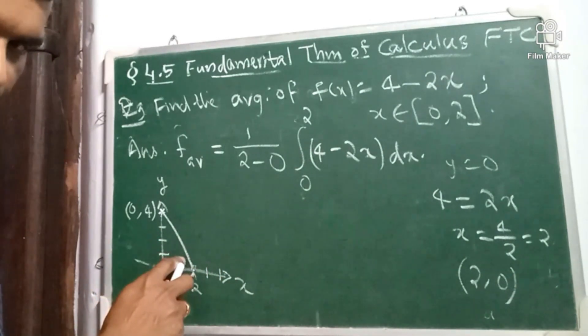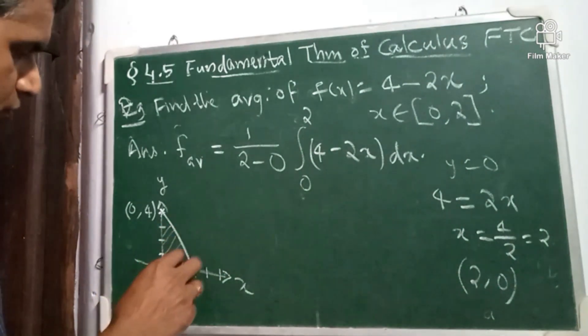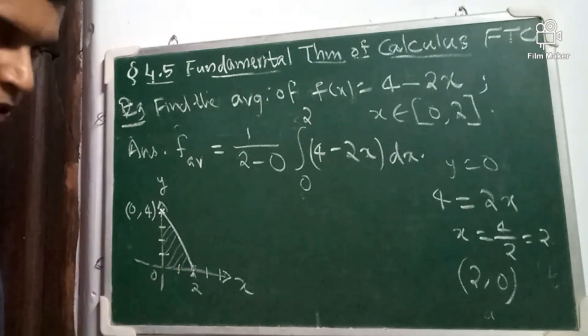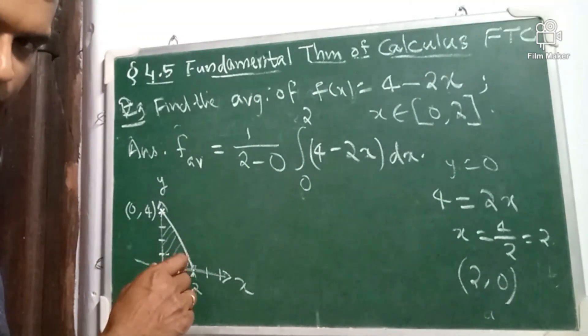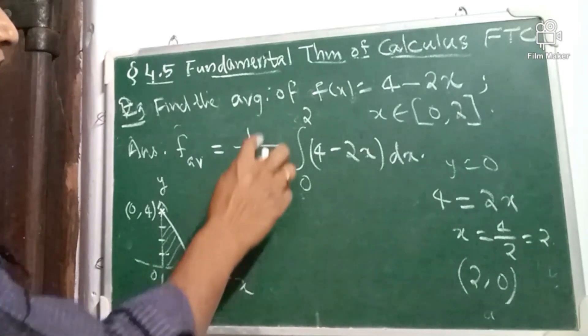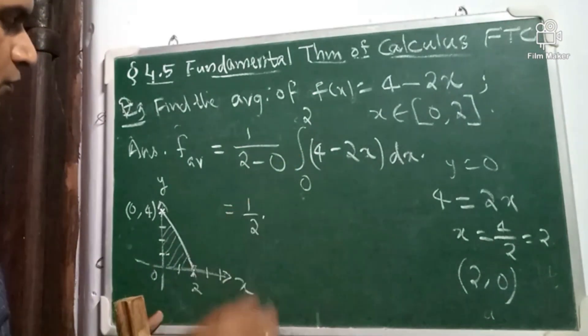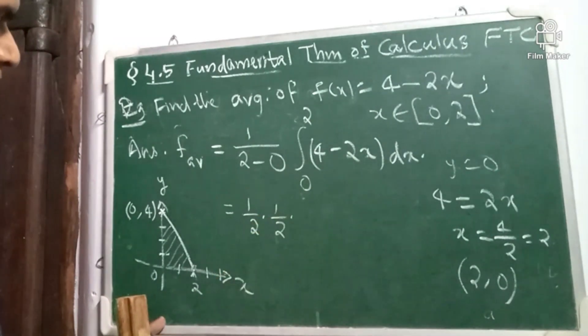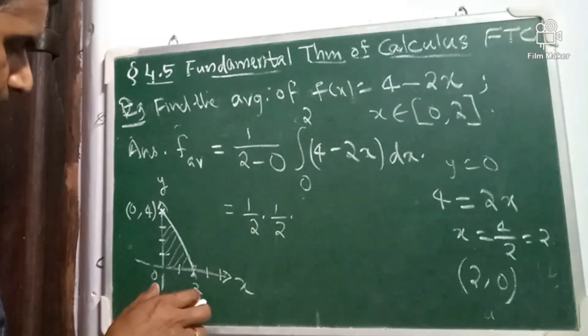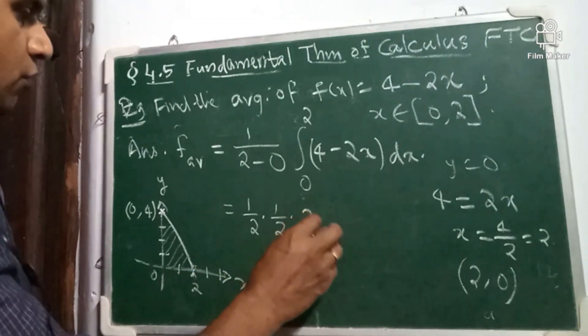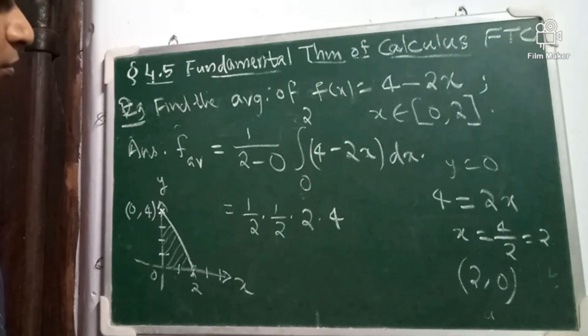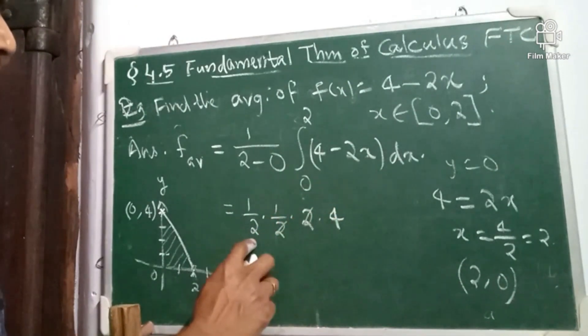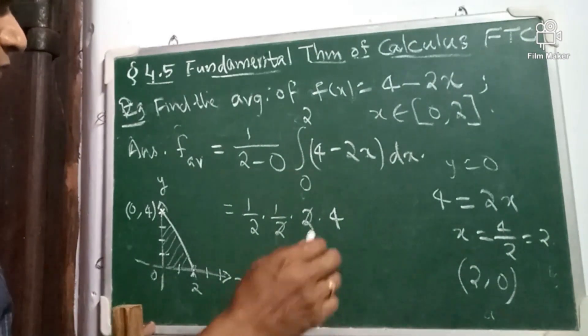Area under this curve, but this is a triangle. So, what is the area under this curve? That means area of this triangle. It is actually half of base into altitude. So, this is equal to, this 1 by 2 is there, into half of, what is base? Base length is 2. What is altitude? Altitude length is 4. So, 1 by 2 into 2 into 4. So, it is actually 2 to cancel. So, 4 by 2 is equal to 2. So, this is the average.